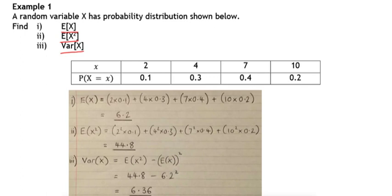The expected value of x, as the formula above suggests, is the x value multiplied by the probability. So 2 times 0.1, 4 times 0.3, 7 times 0.4, etc., giving us a total of 6.2. That's your expected value of x.